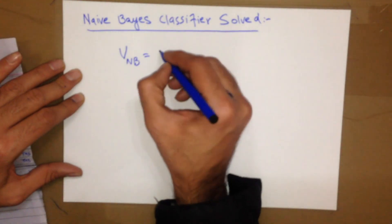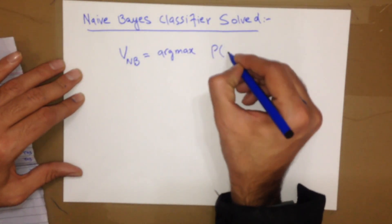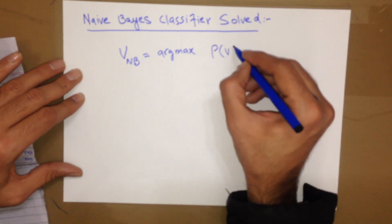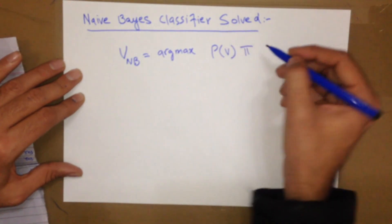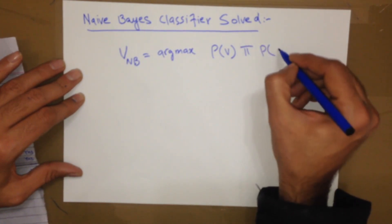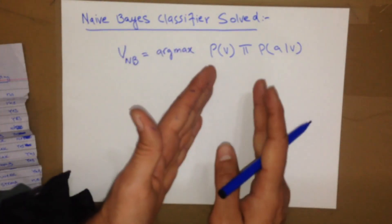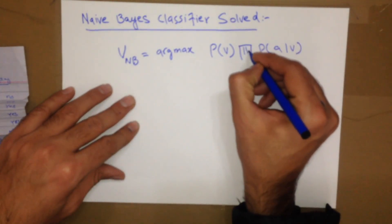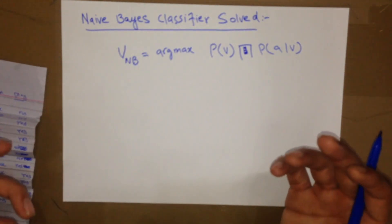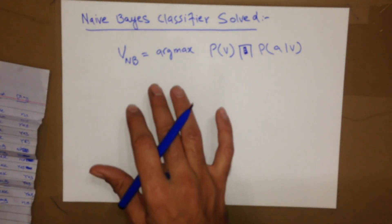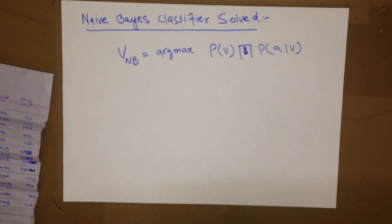The outcome is basically the argmax — the maximum value of the probability coming from one of the classes. For any specific class, all the probabilities for that class get multiplied together. All the positive class probabilities get multiplied together, and all the negative class probabilities get multiplied together. Whichever class has the higher probability becomes the target result.